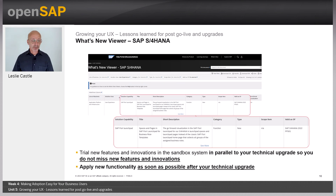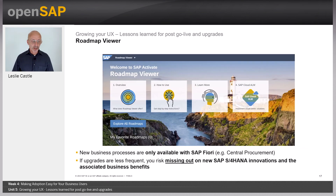You can also use the SAP S/4HANA What's New Viewer. You can apply all new features in your sandbox in parallel to your technical upgrade and apply the functionality as soon as possible after your technical upgrade. There's also the SAP Roadmap Viewer. It's important to understand that new business processes are only available with SAP Fiori — for example, central procurement — so if you're not using SAP Fiori, you'll be missing out completely on these new processes and innovations. If upgrades are less frequent, you risk missing out on SAP S/4HANA innovations and associated business benefits.